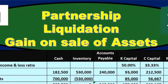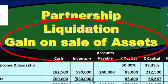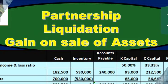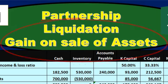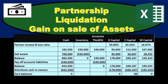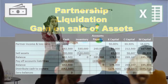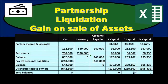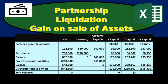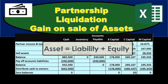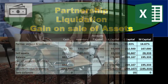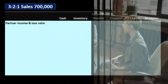In this presentation we will take a look at partnership liquidation where there is a gain on sale of assets. Although a liquidation process — the closing of a partnership — doesn't happen all that often, it is very important to look at because it helps us focus on the area that differs from other organizations: the capital accounts, and how we allocate information to them. This also helps us see the accounting equation — assets equal liabilities plus equity — focusing specifically on equity, which now includes three partners who own the partnership.